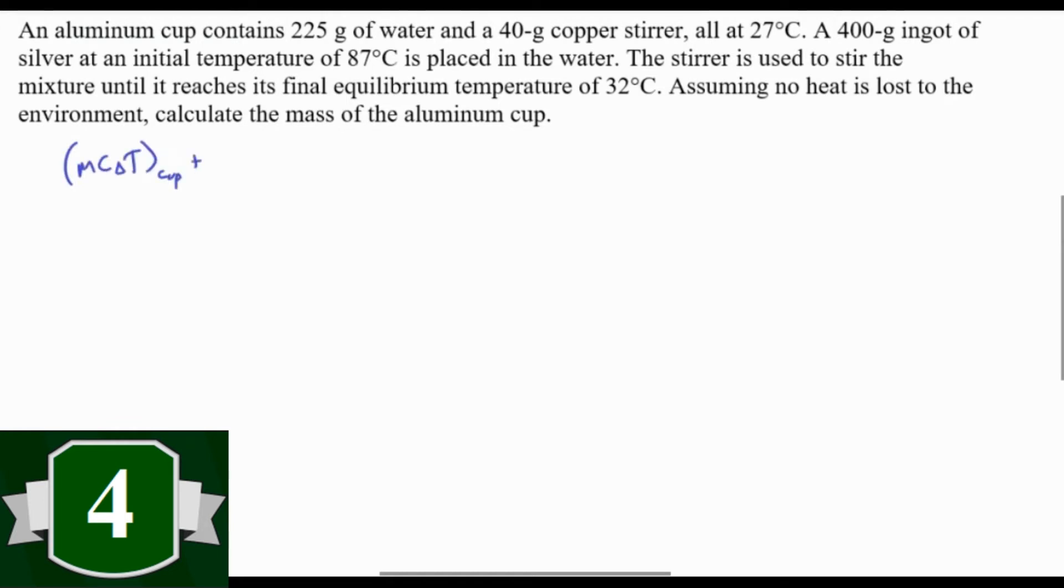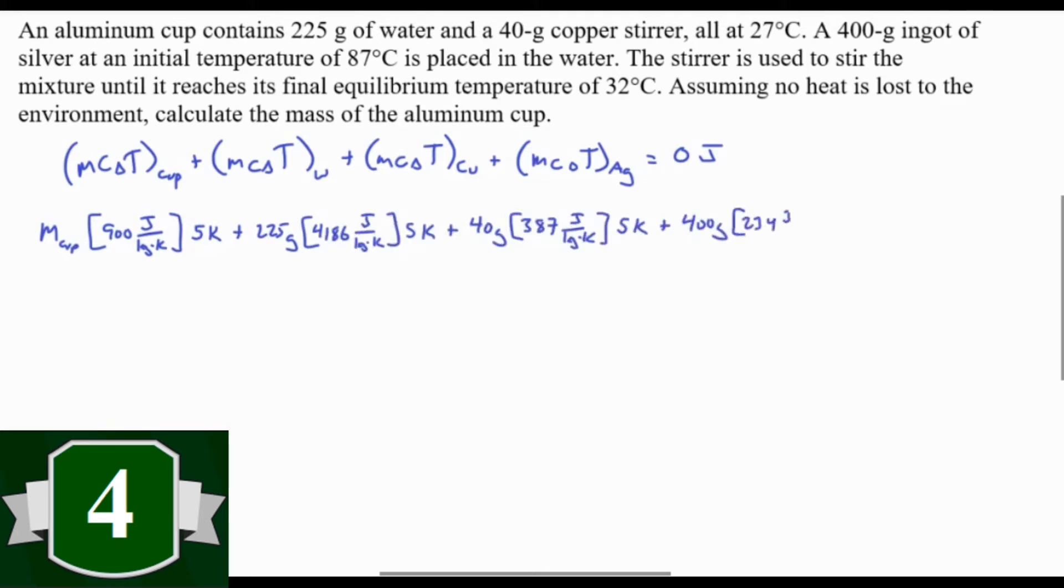Really, this is conservation of energy. We're going to use mc delta t, where m is the mass, c is the specific heat, delta t is the temperature. We'll have to look up all those specific heats. And all we do is say mc delta t for the cup plus mc delta t for the water, and then for the copper, and then for the silver has to add up to zero joules. That's the change in energy is zero. Then you just plug in all of your numbers, noticing that on the very last one, the change in temperature is negative. That's why this will add up to zero. Do all that, solve, you get 80 grams.